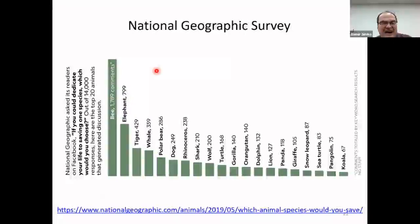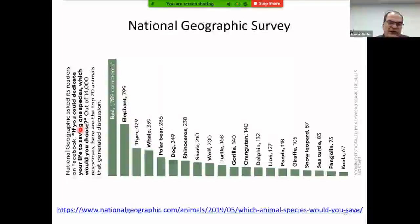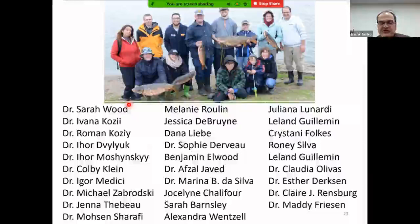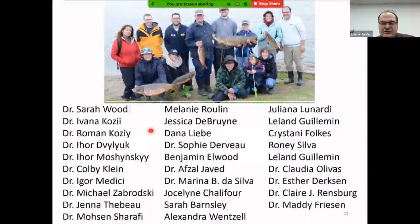Why is there such high interest? This survey by National Geographic asked: 'If you could dedicate your life to saving one species, which would you choose?' Honeybees were by far overrepresented — double over elephants. All of the people over the last five years shown here were directly involved in research on honeybees — some were technicians, summer students, visiting students, or visiting scientists.